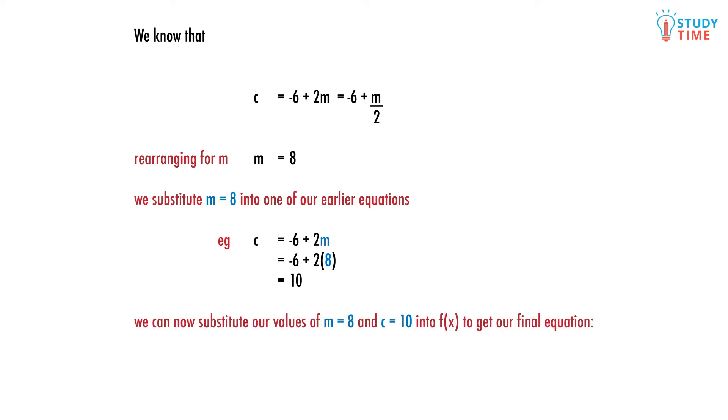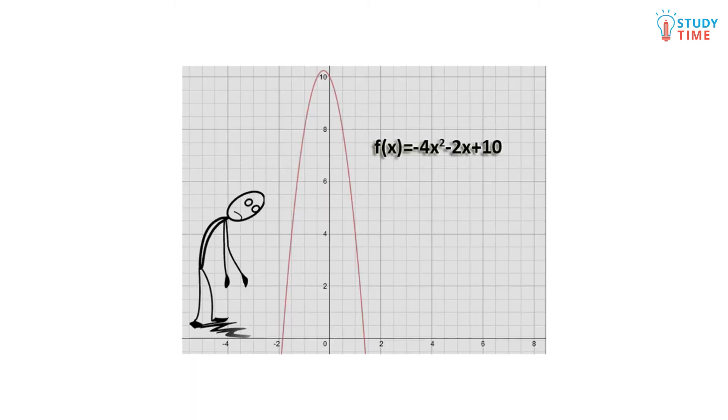We can now put this information all together to give the final equation: f(x) equals -4x² minus 2x plus 10. If you graph this, you'll see it's a pretty steep parabola—not something you'd want to walk up.